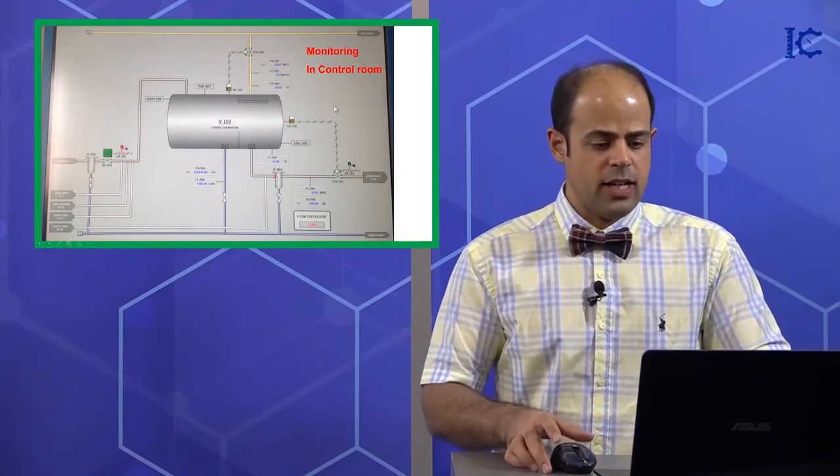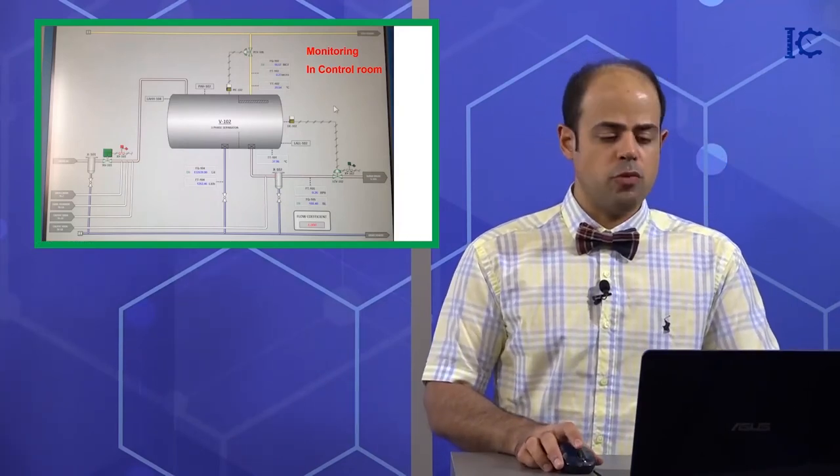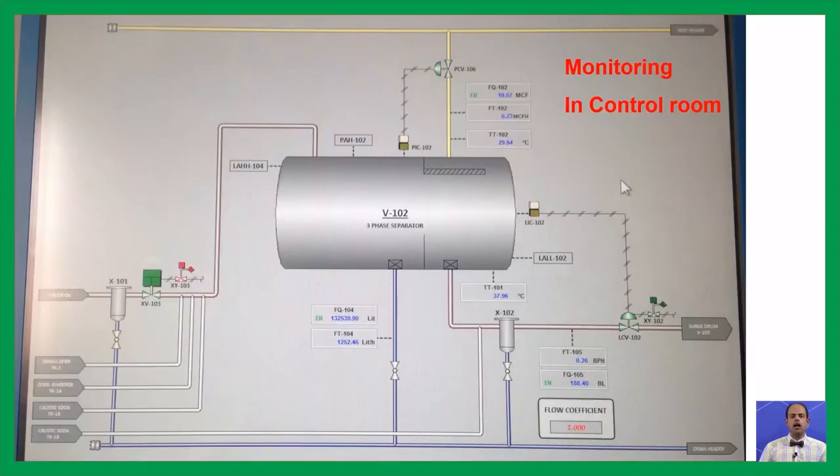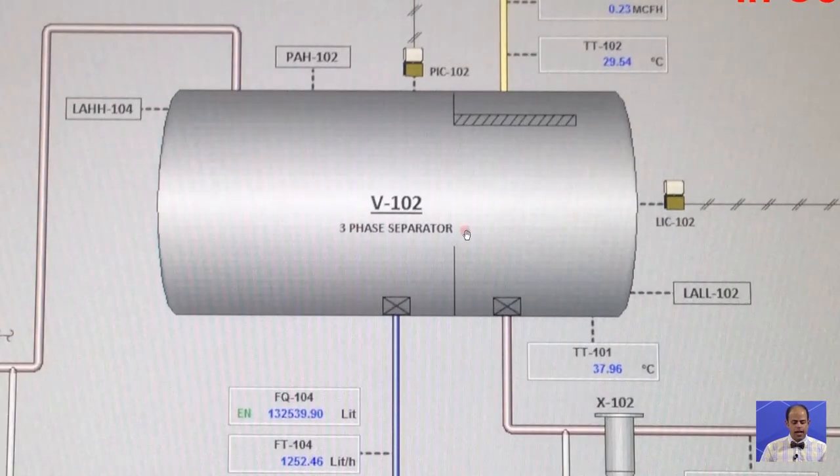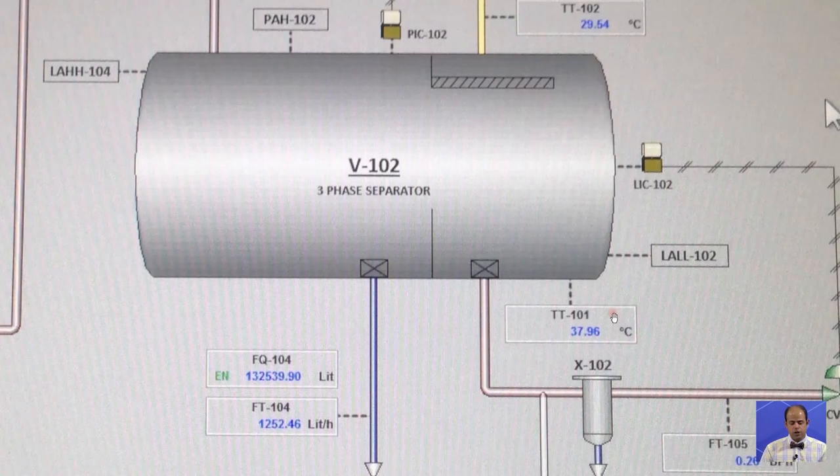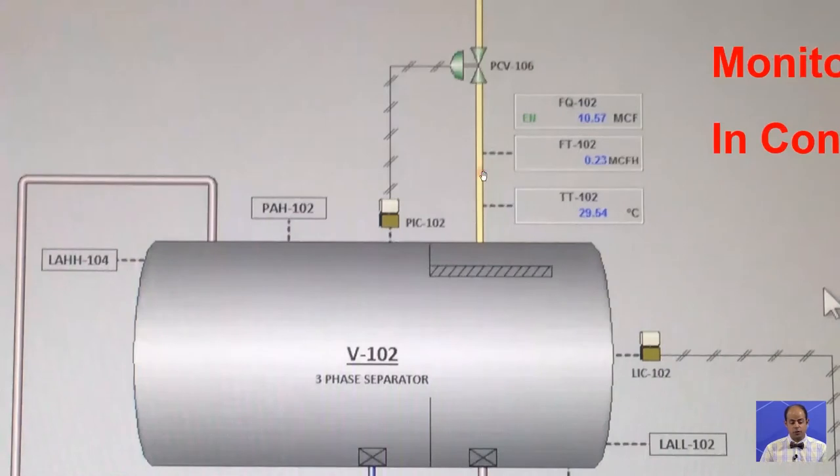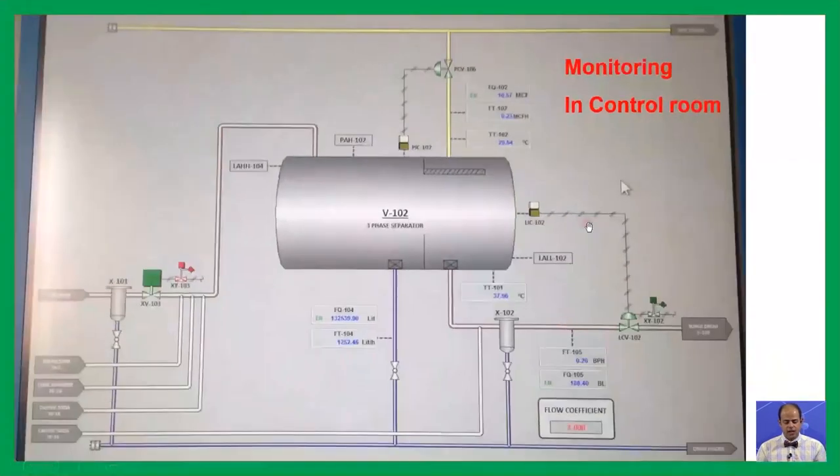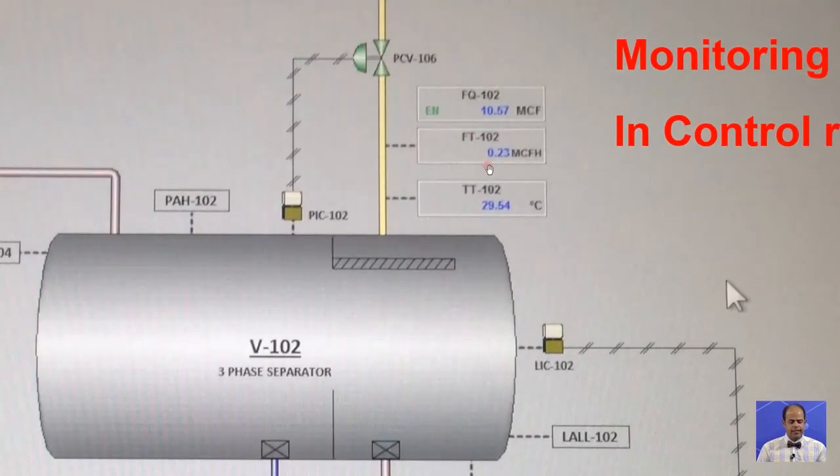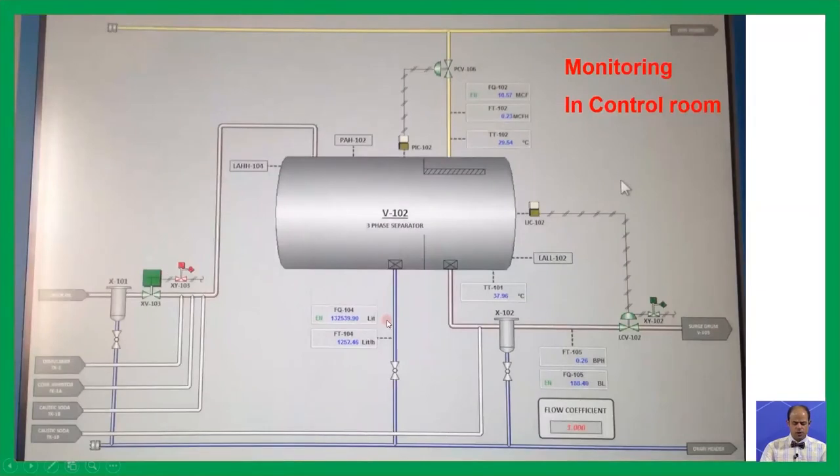This is another project that I was working there for around one year and a half. Again you can see the monitoring system of the device too. For example this is the computer and the monitor of computer actually and you can see a vessel, it's a three-phase separator and you can see for example the temperature around 37 degrees centigrade. For a case of vent line of the separator the temperature is 29 and other things such as the data related for flow.